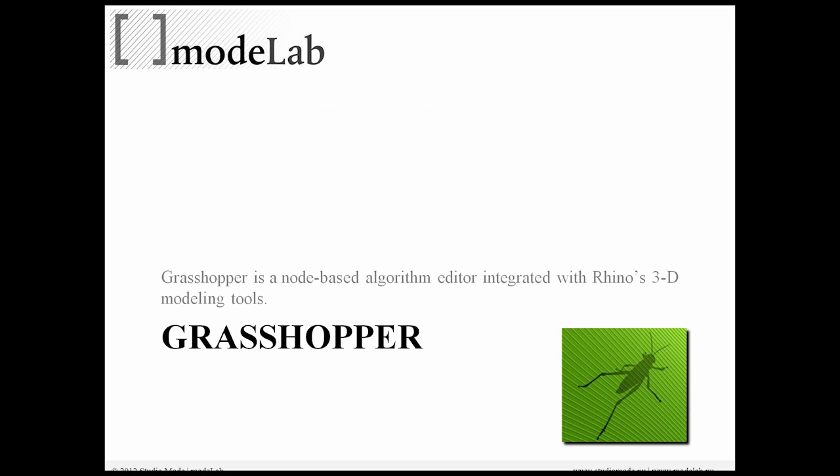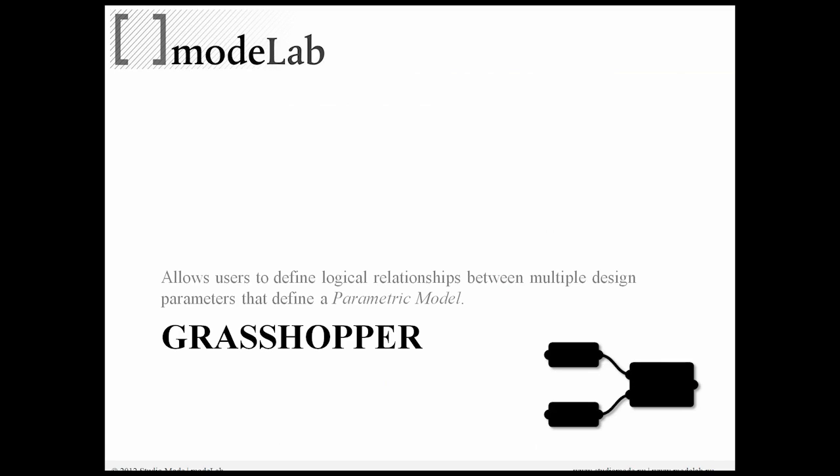So Grasshopper. Grasshopper is a node-based algorithm editor integrated with Rhino3D's modeling tools. It allows you to define logical relationships between multiple design parameters that define a parametric model. At the bottom right, you can see in icon format what that parametric model might look like—nodes connected to other objects using wires.